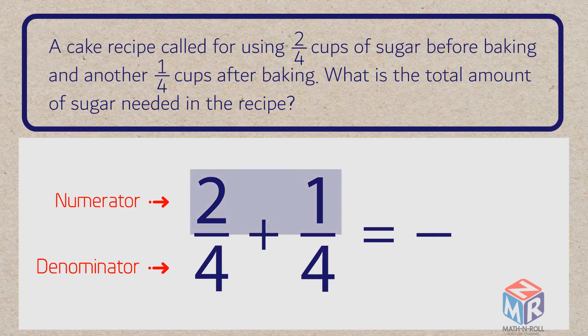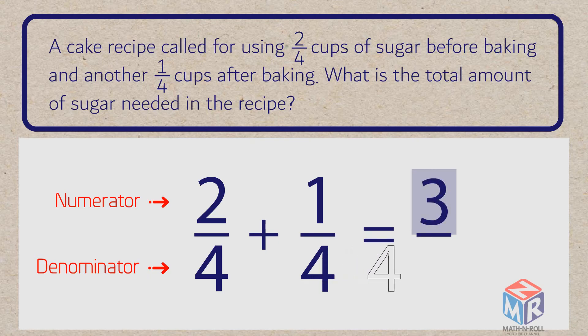To add fractions with like or same denominators, simply add the numerators. Keep the denominator the same. 2 plus 1 equals 3. The answer is 3 fourths.